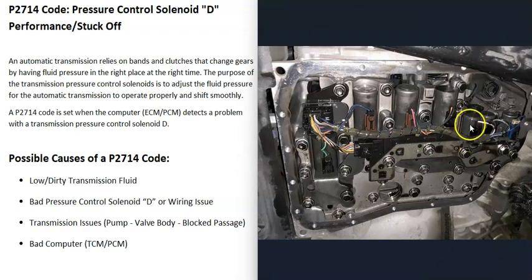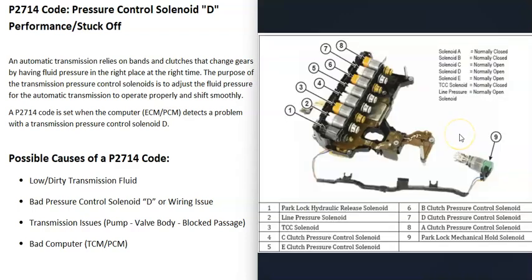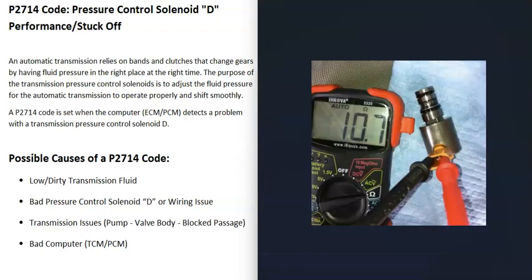The next possible cause is a bad pressure control solenoid D or the wiring going to it. The solenoid may have gone bad, or there could be an open or short in the wiring. You'll need to get a diagram showing which solenoid does what and where it's located, since this varies depending on the vehicle and transmission. Locate solenoid D and test it — you can use a good OBD2 scan tool or a multimeter. All these solenoids have a rated ohm value.